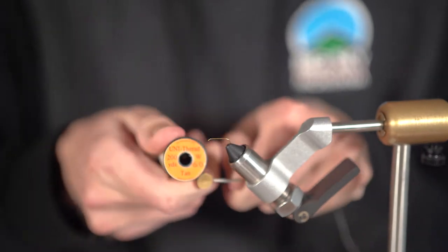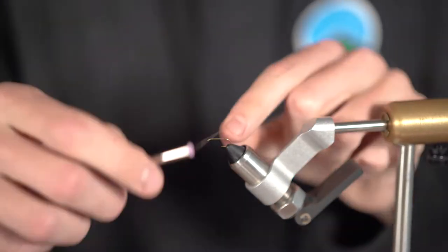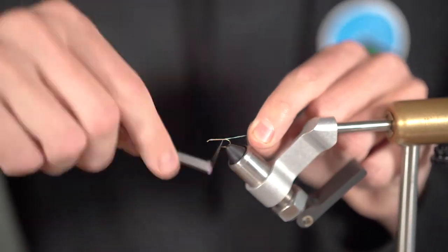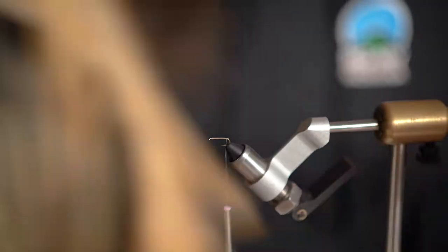Alright, first firmly clamp the hook into your vise and wrap from the eye of the hook to just before the bend of the hook with your 6 oz thread and snip off the excess.